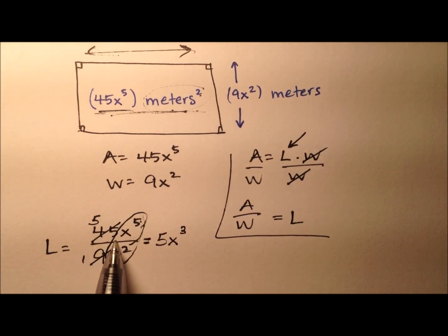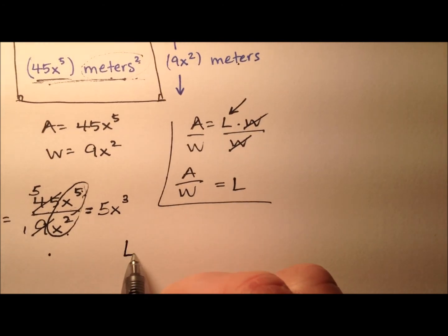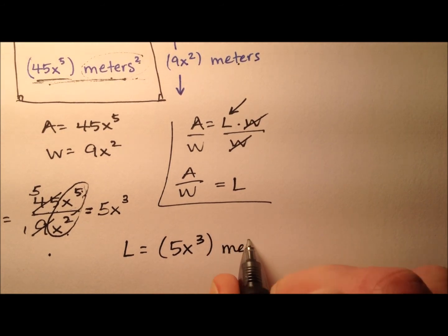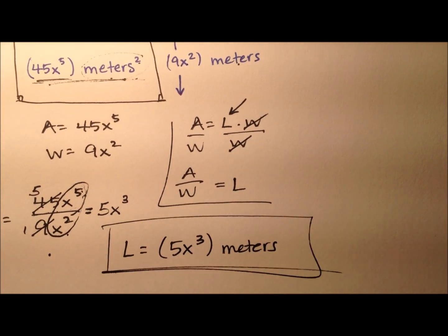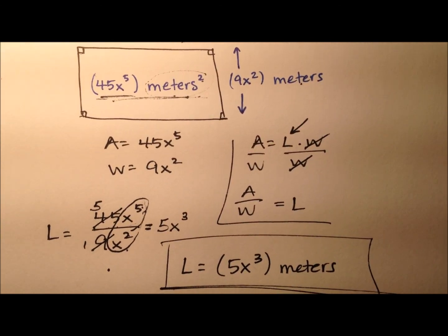When I take meters squared, which is the units for the area on top, and divide it by meters, I'll end up with just meters. So I can say now that the length of that rectangle is 5x cubed for the monomial expression, and then the units will be meters.